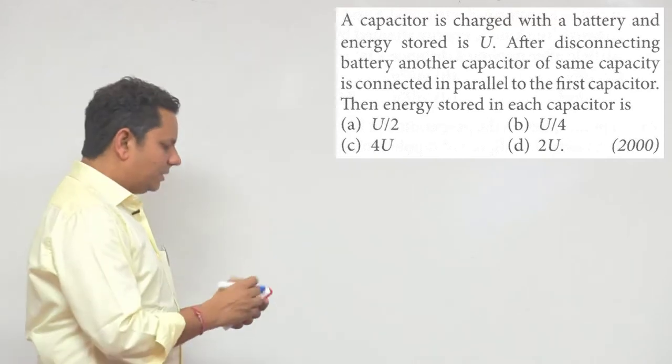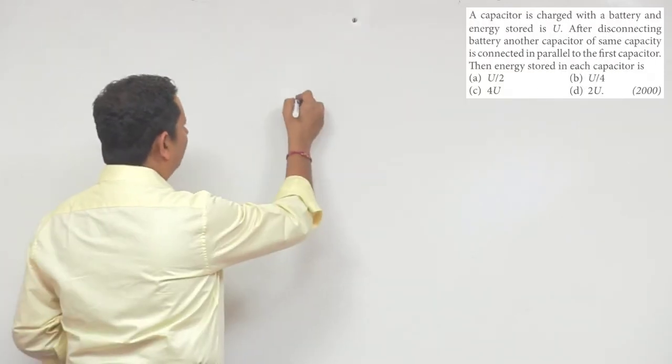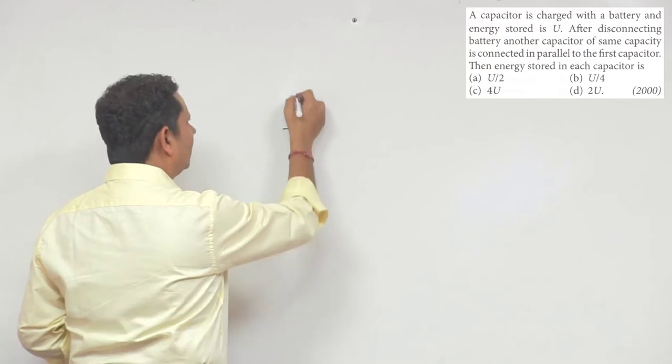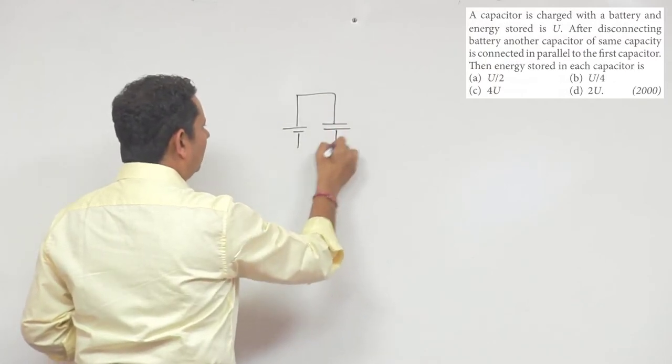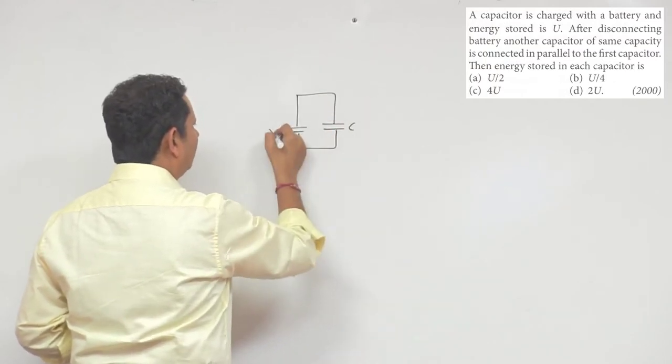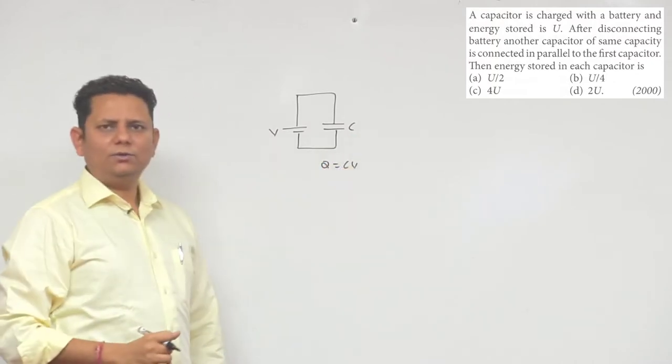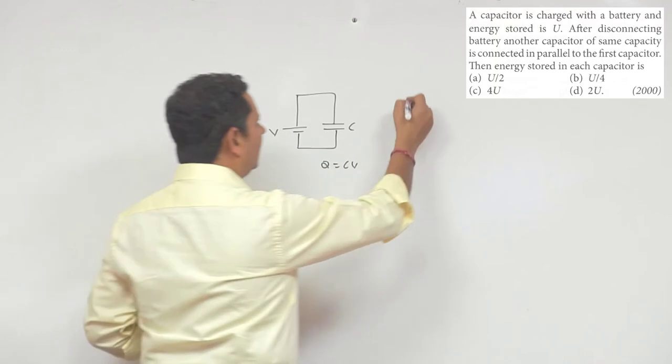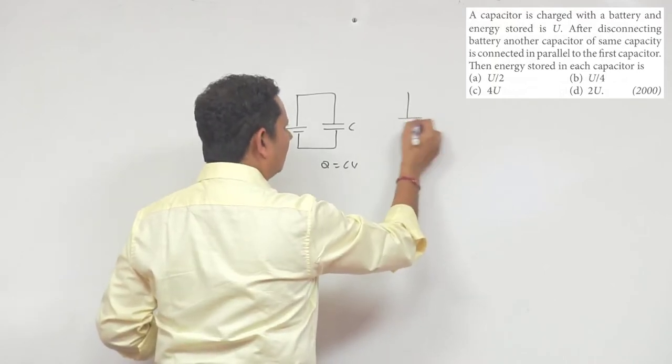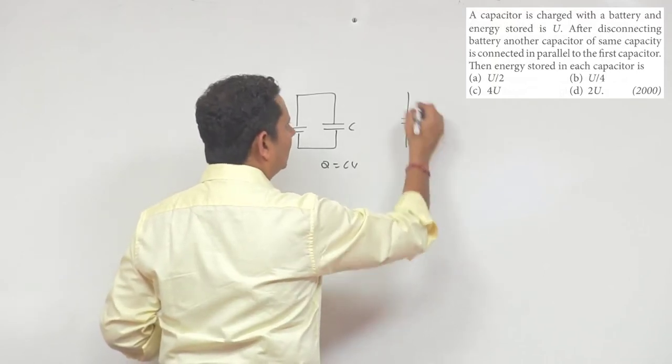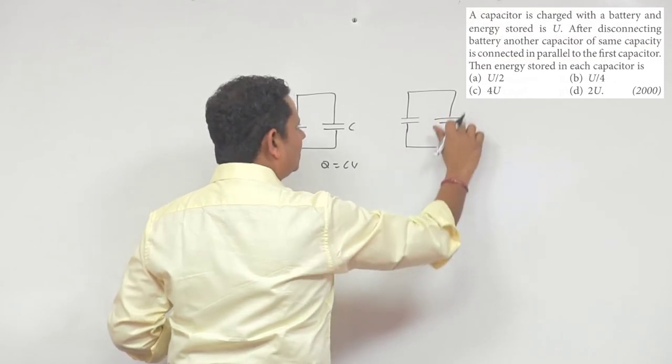The situation is simple: You have a capacitor with full charge C, capacitor V volt, which will be equal to Q = CV. Now we have to disconnect this capacitor and connect this capacitor which is the same C.